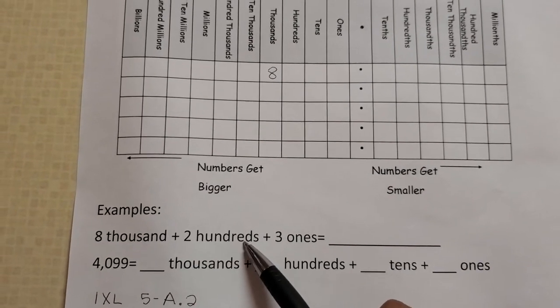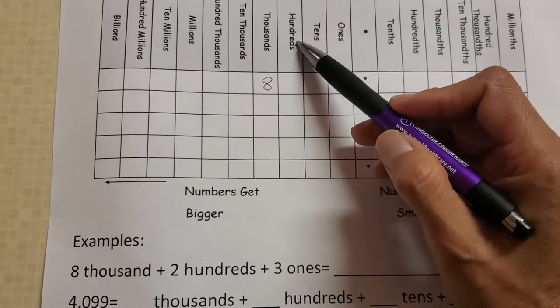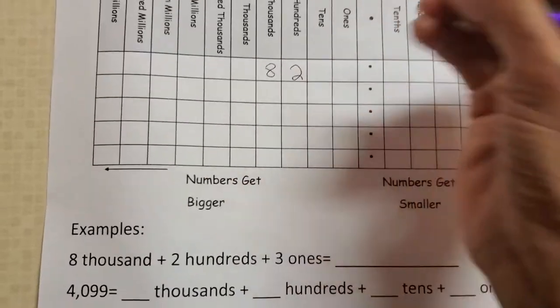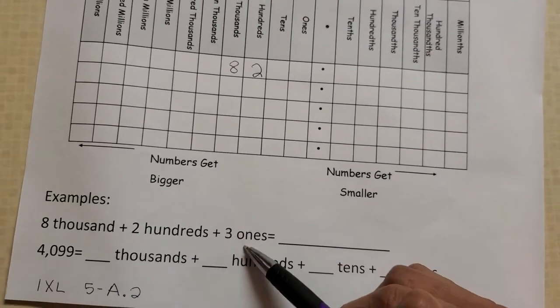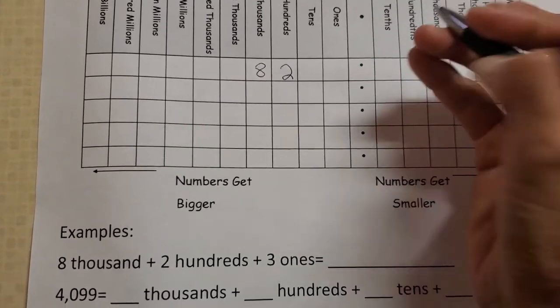Two hundreds, so look for the two hundreds. Here's hundreds and we're going to write 2. And it says 3 ones, so right here says ones and we are going to write 3.